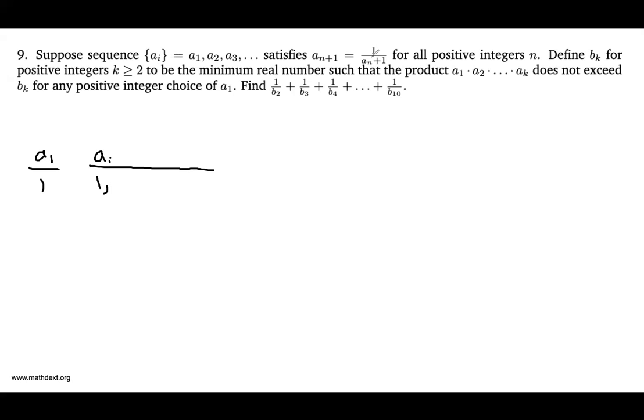1, then a2 is 1 over 1 plus 1, which is 1 half. a3 is 1 over half plus 1, which you can find is two-thirds. And then a4, if you go 1 over 2-thirds plus 1, you get 3 over 5. And then if you keep writing down a few more terms, you get 5-eighths, 8-13ths, and so on and so forth.